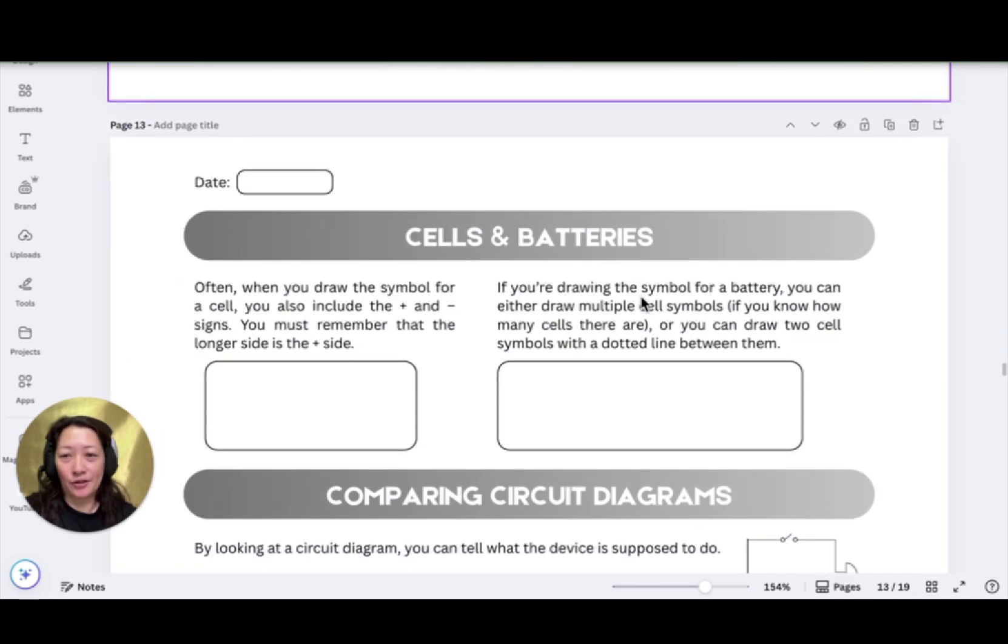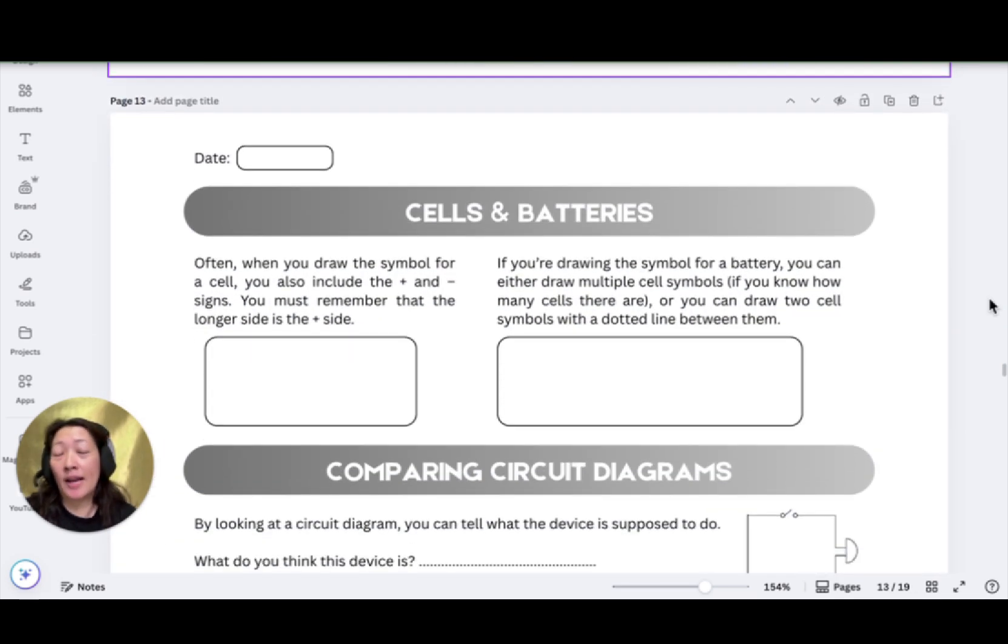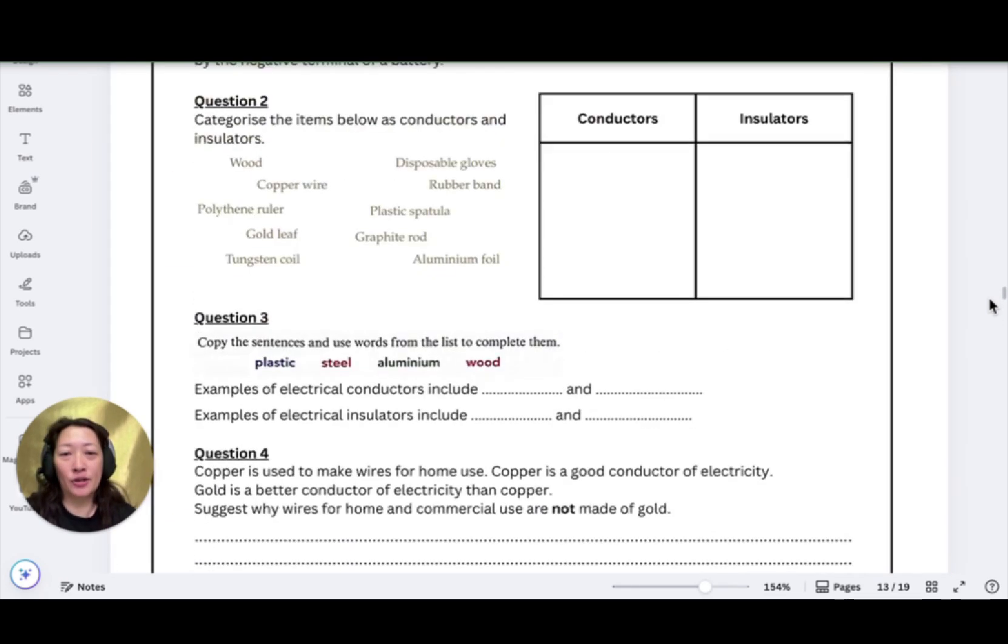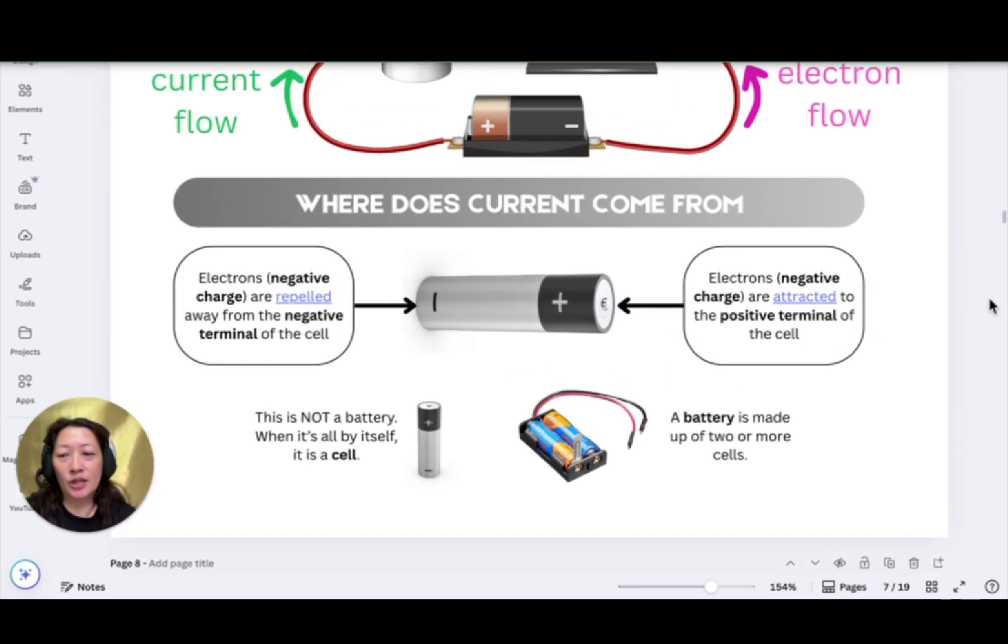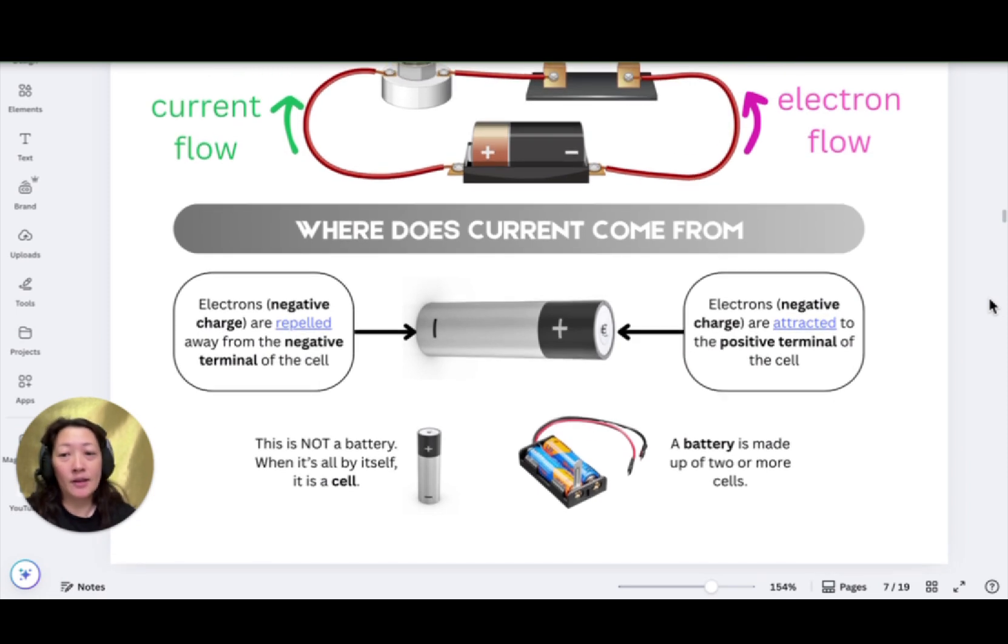Now let's move on to the next page. Now remember the difference between a cell and battery, and we've learned this in an earlier lesson. So I'm just going to backtrack to remind you. This is not a battery. When it's all by itself, it is known as a cell. A battery is made up of two or more cells. So what we normally call as a battery in real life, actually it's a cell. So why we call it a battery in real life is because normally a battery pack consists of more than one cell. So as science students, you need to know that when it's by itself, it's a cell while a battery is made up of two or more.